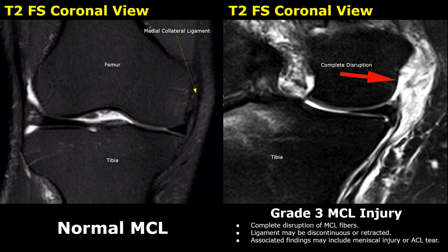These are T2 fat-suppressed images. The normal MCL appears as a dark, hypointense fibrous band with no hyperintense bright fluid surrounding it in this sequence. In the image on the right, a complete MCL tear is present. The ligament fiber is not seen in its original location; instead, there is a large collection of fluid and blood present in this region. The MCL has retracted due to a complete rupture.